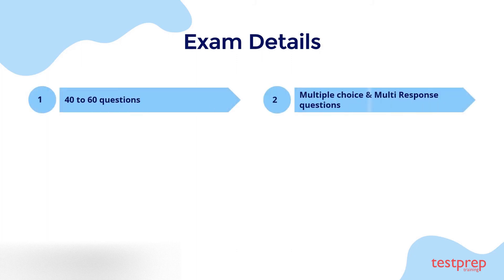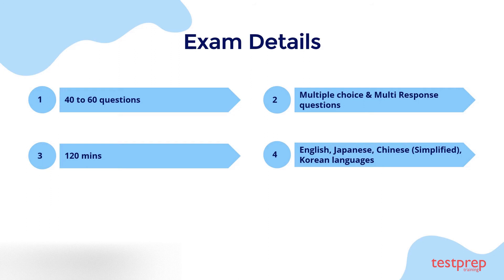The Microsoft Identity and Access Administrator exam covers 40 to 60 questions in multiple choice and multi-response format. The candidate will get 120 minutes to complete the exam. It is available in English, Japanese, Chinese, and Korean languages, and candidates must score 700 to achieve this certification.